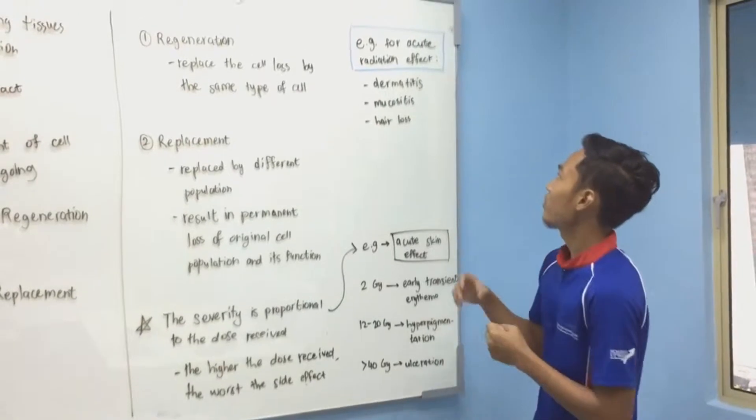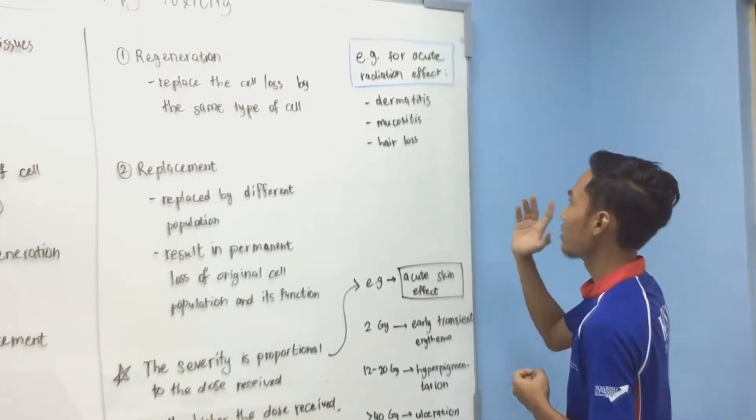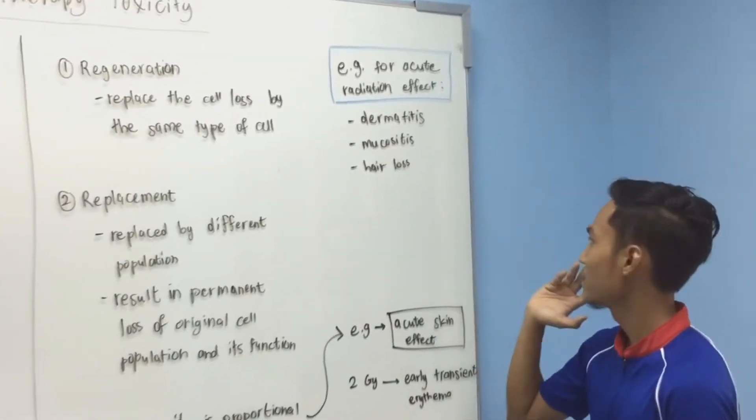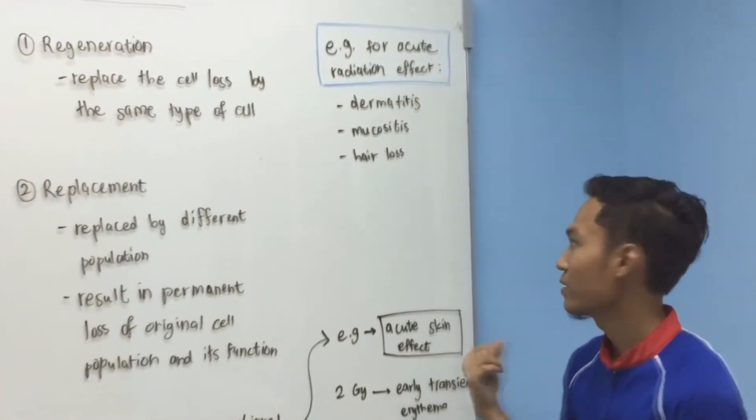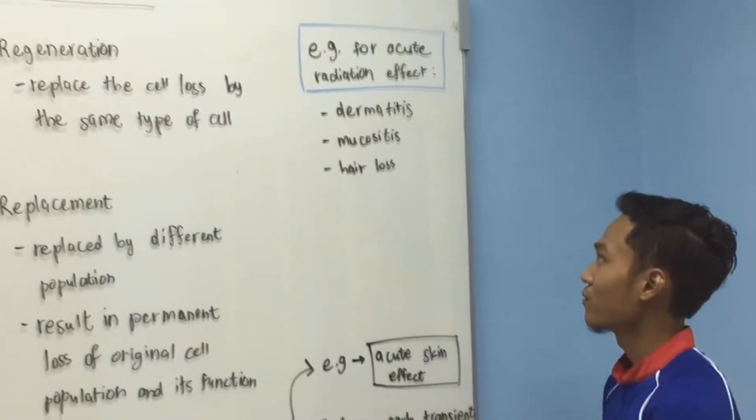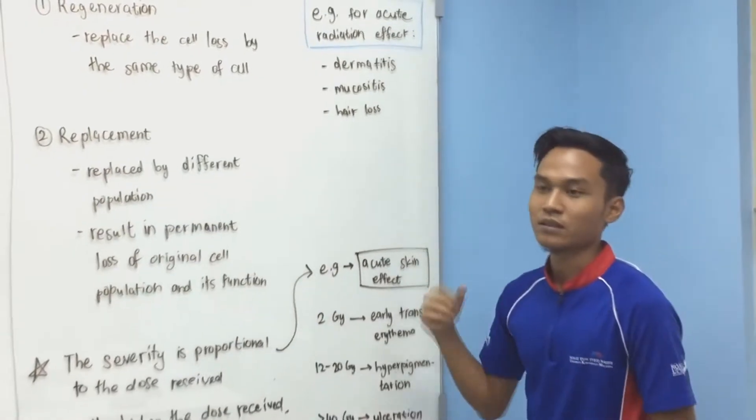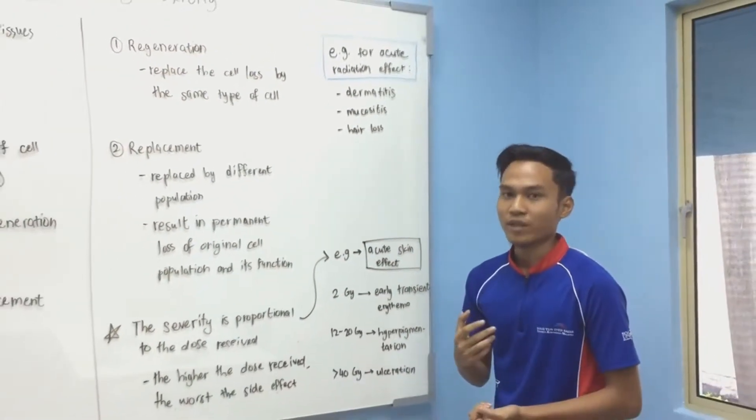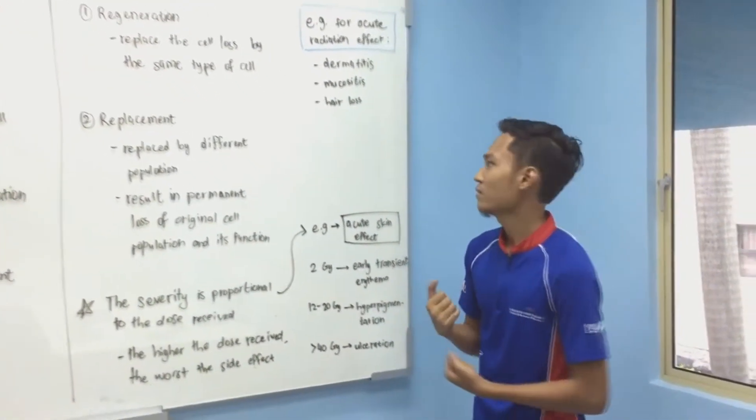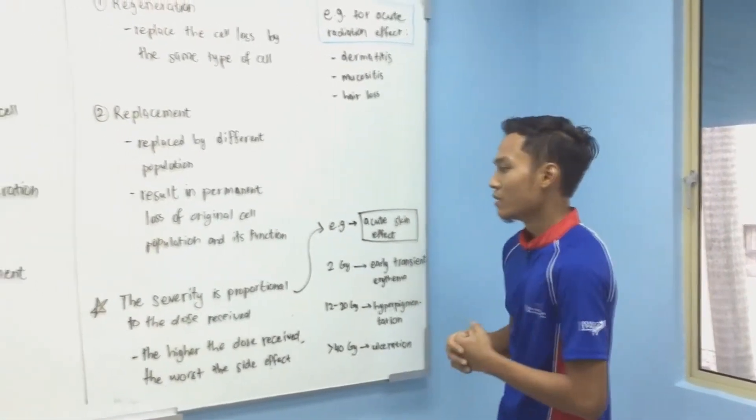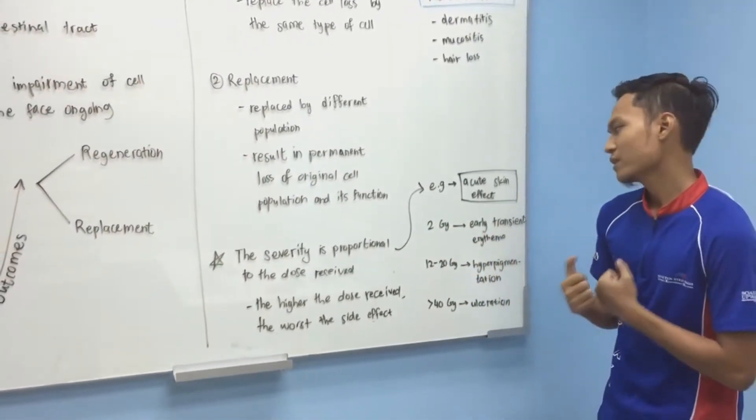Examples of acute radiation effects are dermatitis, mucositis, hair loss, and other things. For example, hair loss is not caused by the tumor or cancer, it is caused by the treatment.